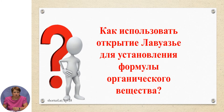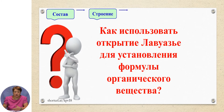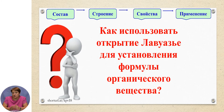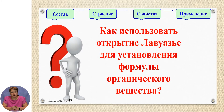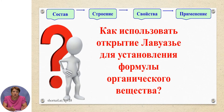A question arises: how can we use Lavoisier's discovery to establish the formula of an organic substance? If we know the composition — that is, what a substance consists of — we can, knowing some of its properties, hypothesize its structure and predict other properties. And knowing the properties of substances, we can determine where and how to apply them. So note that the relationship between composition and application exists, of course, through several steps.